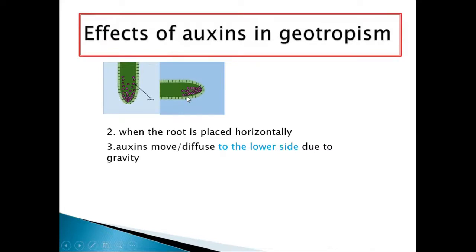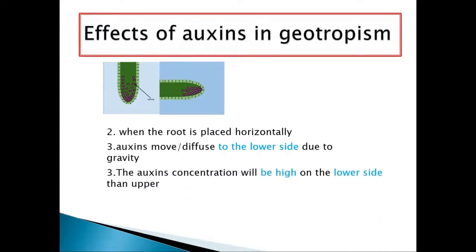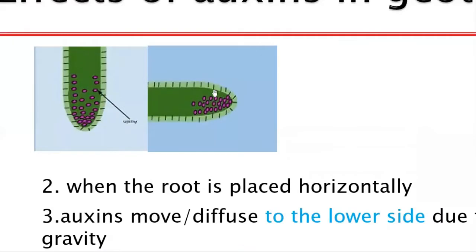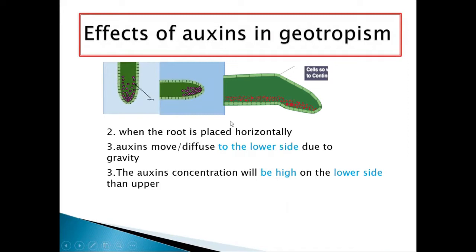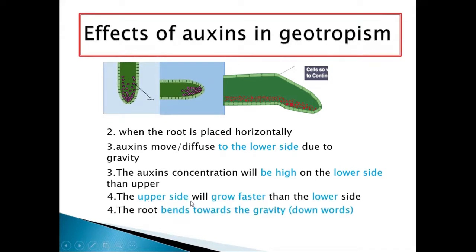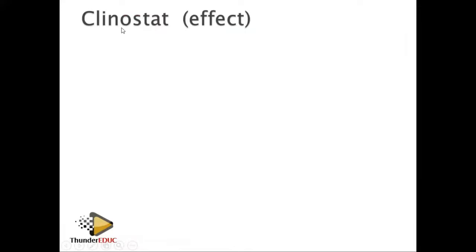The auxin concentration will be high on the lower side, so the lower side will grow less than the upper side because the lower side has more auxins which inhibit growth. The upper side, having less auxins, will grow faster than the lower side. Therefore, the root bends towards gravity — it grows downwards.